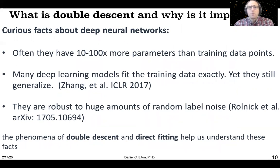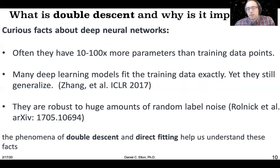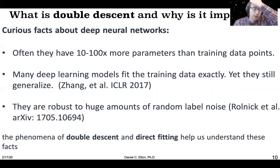Recently, in the past year or two, there's been the discovery of the double descent phenomenon. I think this is very important for understanding how deep neural networks function and why they are hard to interpret. It's been known for quite a while that deep neural nets often have a hundred times more parameters than training points. From a classical statistics perspective, they should be overfitting, yet they do not overfit and they can still generalize — meaning they can make accurate predictions on data points from the same distribution they were trained on. The phenomenon of double descent and the related phenomenon of direct fitting really explain what's going on here.